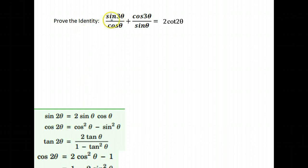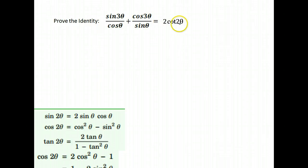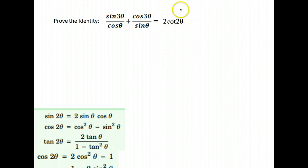We want to prove the identity that sine 3θ over cosine θ plus cosine 3θ over sine θ is equal to 2 cotangent 2θ. It would be pretty tough to try to expand the cotangent 2θ side, and we don't really even have a double angle identity for cotangent 2θ.